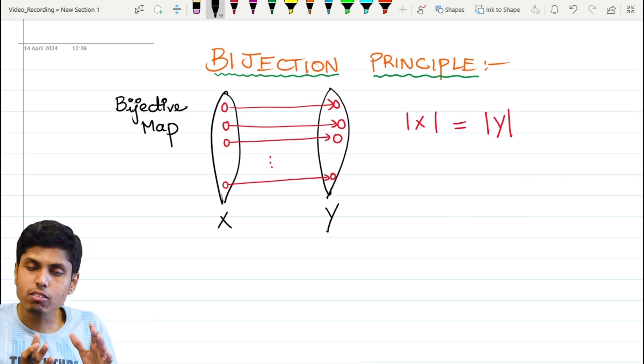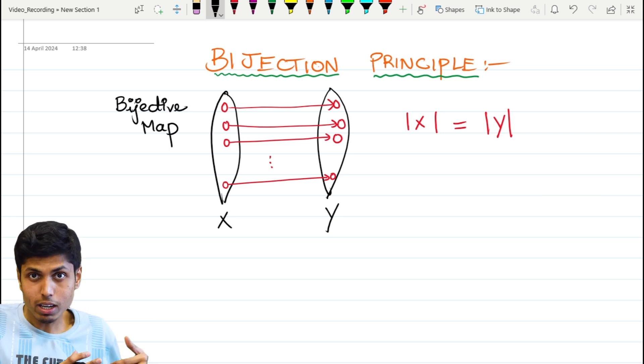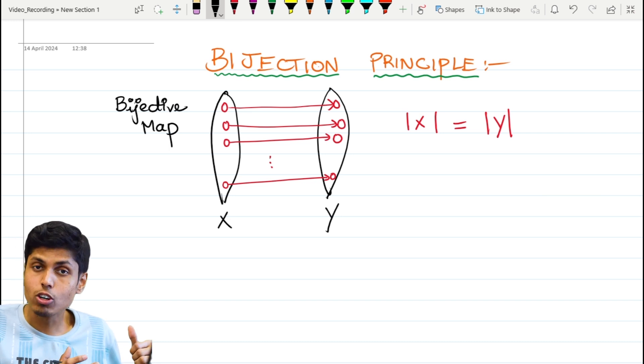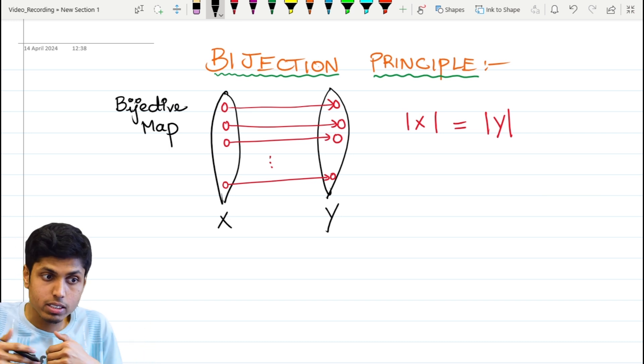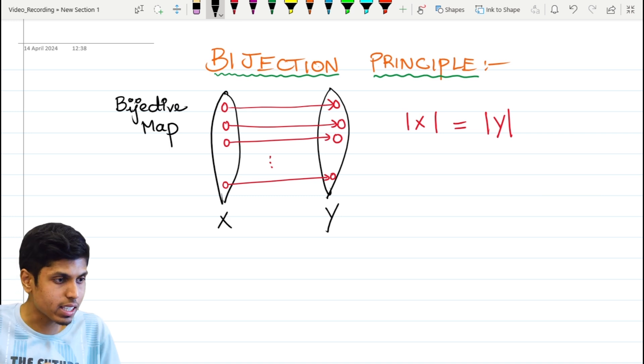So it makes our counting simpler. Why? Because counting set X is the same as counting set Y. But counting set X might be harder because set X might be very hard to build or realize, whereas set Y might be easier to build. Let's see an example.